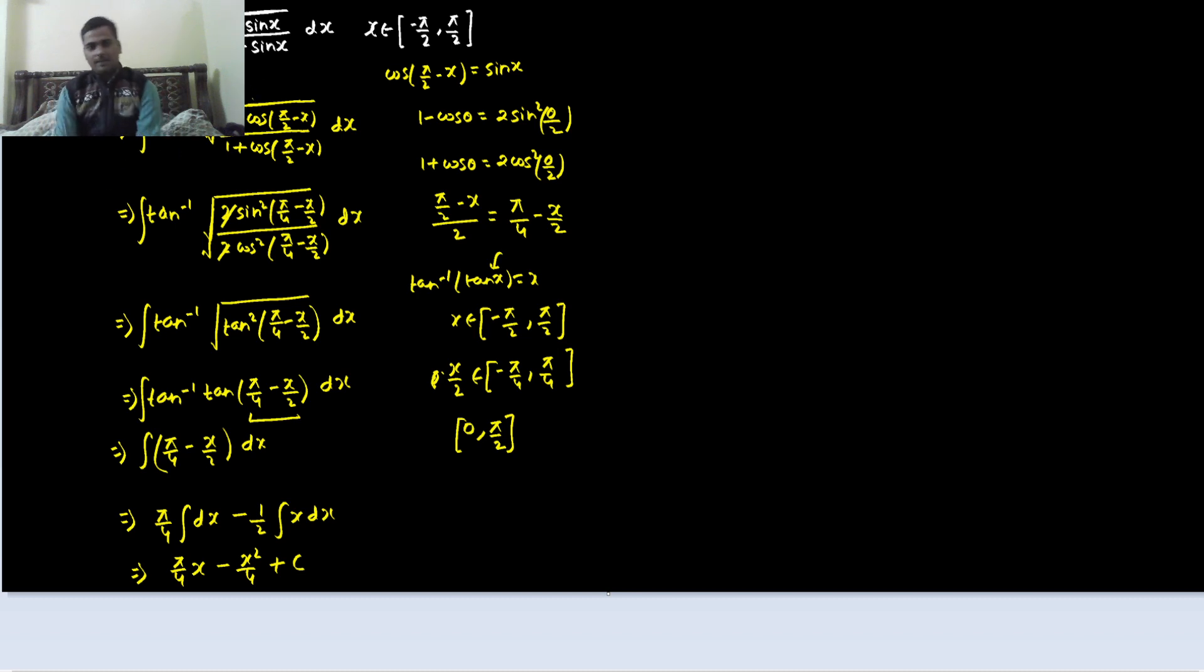then initially the problem was 1 minus sine x divided by 1 plus sine x. Now what we did was we wrote this in terms of cosine because we know the formula for 1 minus cos x and 1 plus cos x. We just simplified it. We got tan inverse tan(π/4 - x/2). Now I checked the condition, and the condition told me that whatever is inside tan is lying between 0 to π/2, so I was fine. So I just simplified it.